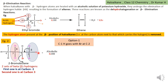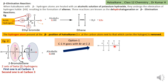Let us see the first option: elimination of hydrogen from the first carbon and bromine from the second carbon. When the H of C1 goes with the Br of the second carbon, it leads to the formation of a carbon-carbon double bond between the first and second carbon atoms, leading to the formation of but-1-ene (1-butene), along with water and KBr (potassium bromide).